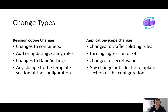Application scope changes will not create a new revision. These include changes to traffic splitting rules, turning ingress on and off, changes to secret values — if our applications are using any secrets and we change those, those won't create a new revision — and any changes that we make outside our template configuration.